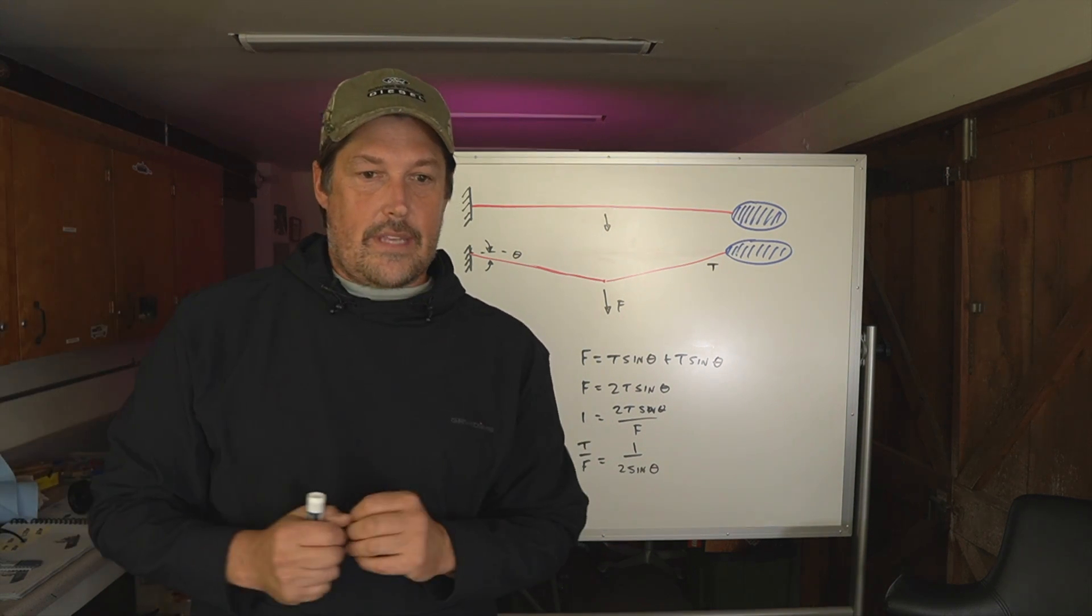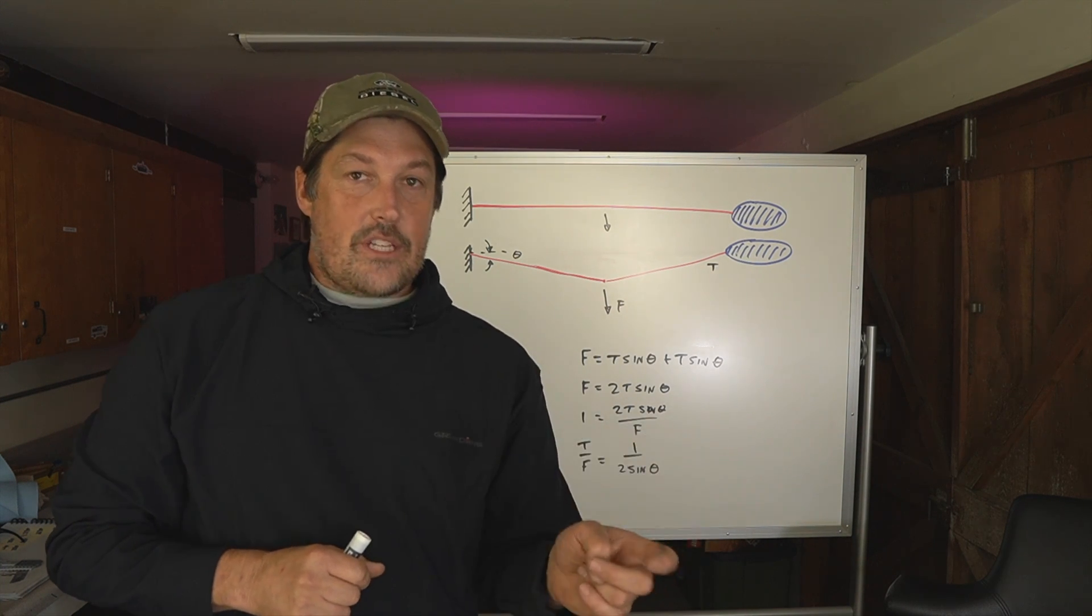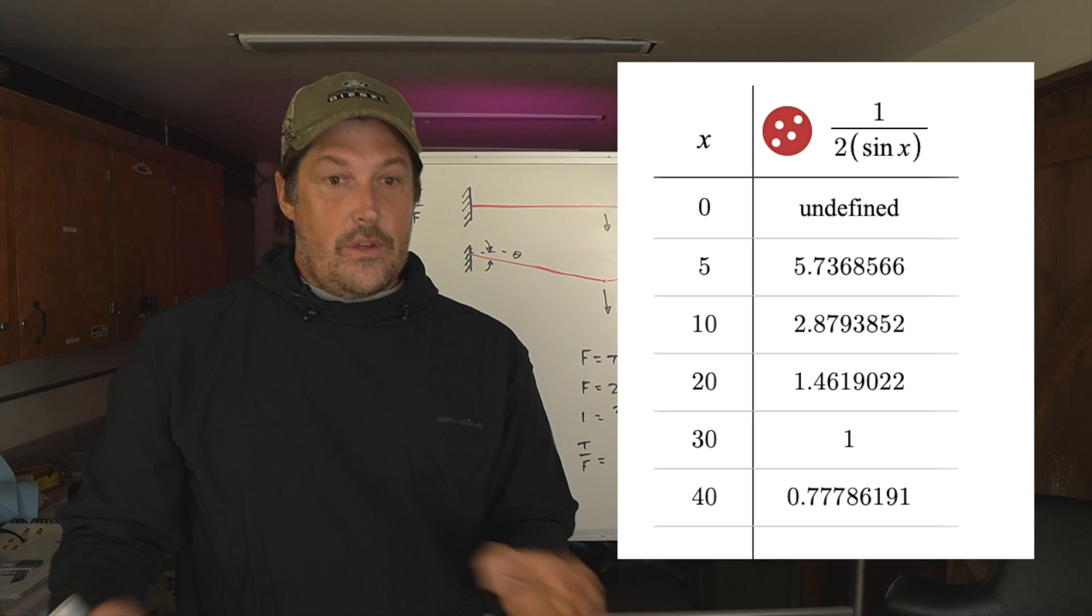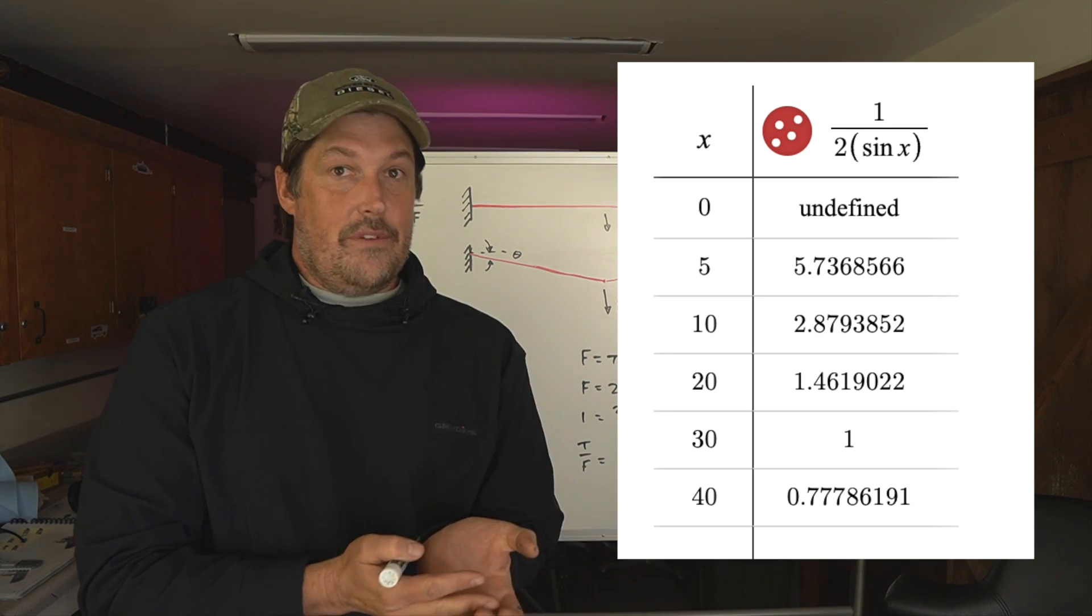I'm looking at a graph right there. I'll put this other graph up on the thing to look at. Probably over here. At 20 degrees, it's 1.46 to 1. And at 30 degrees, it's just 1 to 1. And at 5 degrees, it's 5.7 to 1.